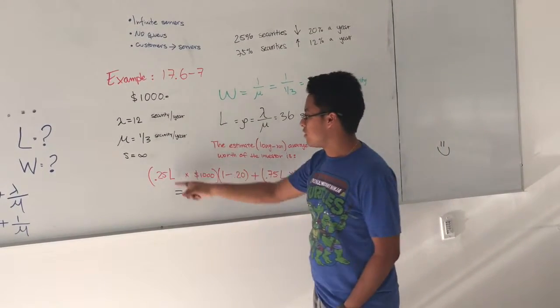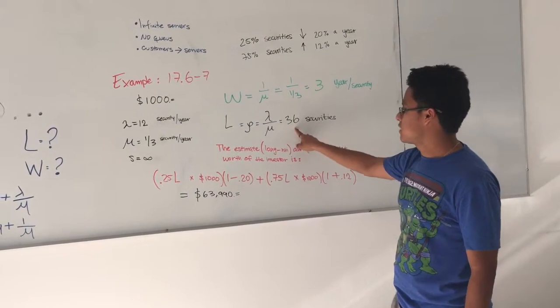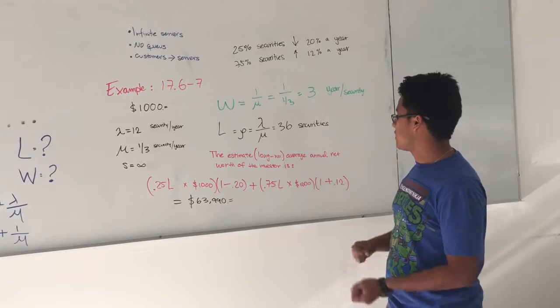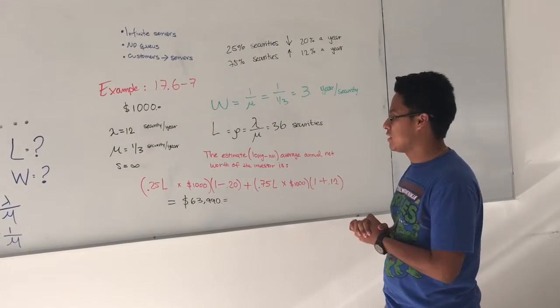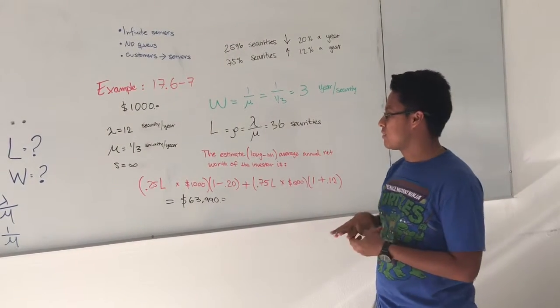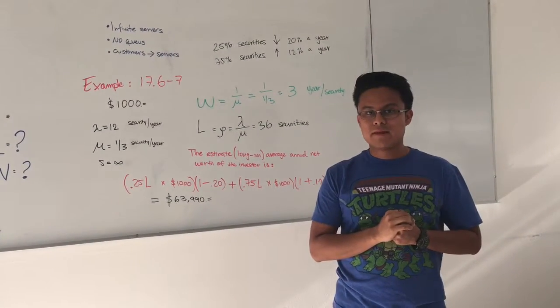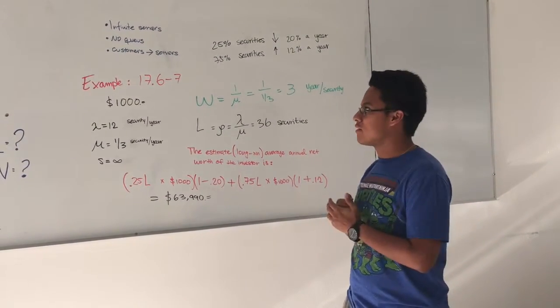So doing all this formula with the 36, we are going to get that the total estimated average annual net worth of the investor is going to be $663.99 dollars. This is all the example.